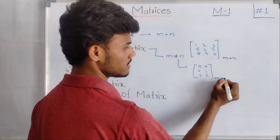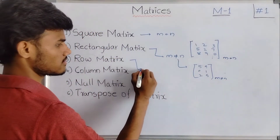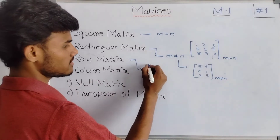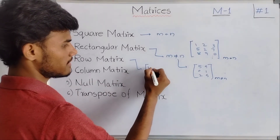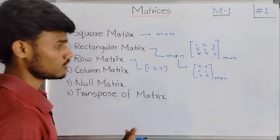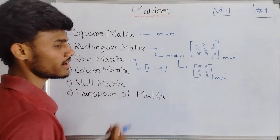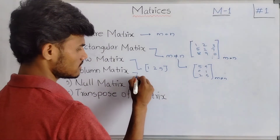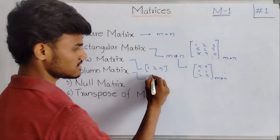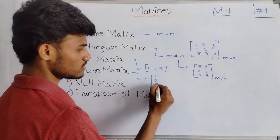Next, row matrix. What is meant by a row matrix? A row matrix is a matrix which consists of only one row. Next, column matrix — a column matrix is a matrix which consists of only one column.